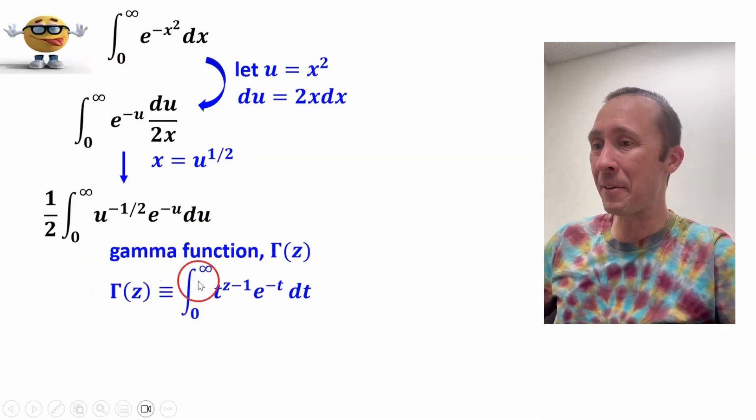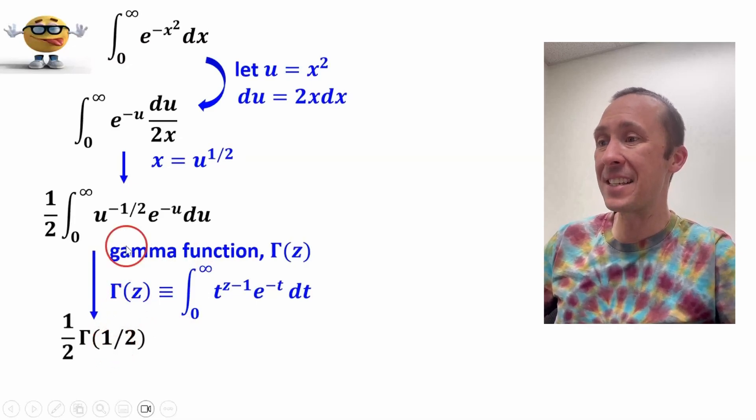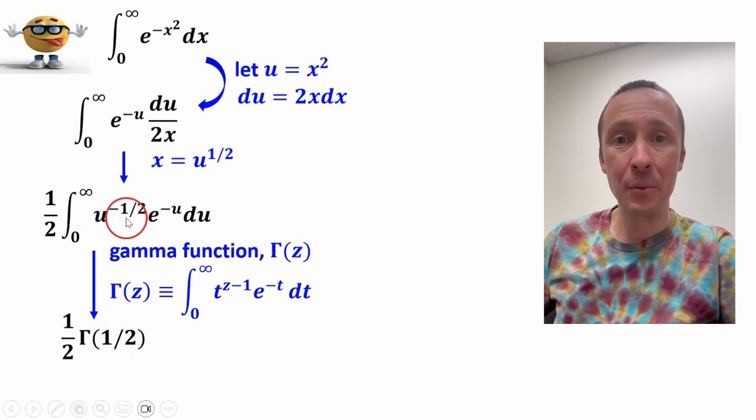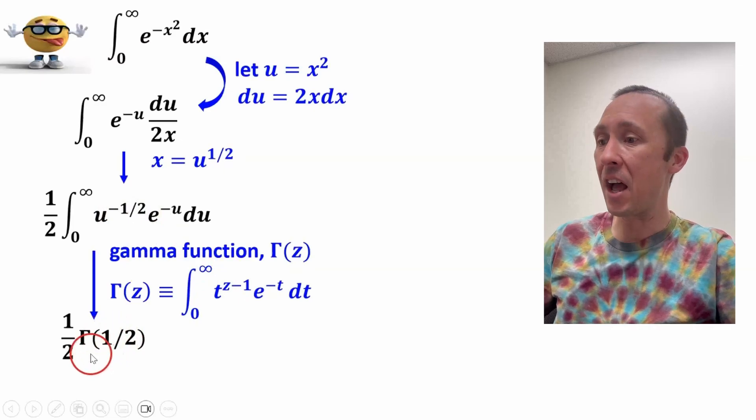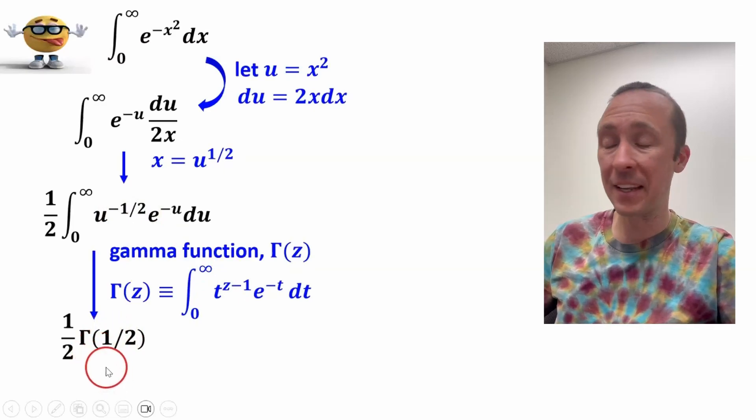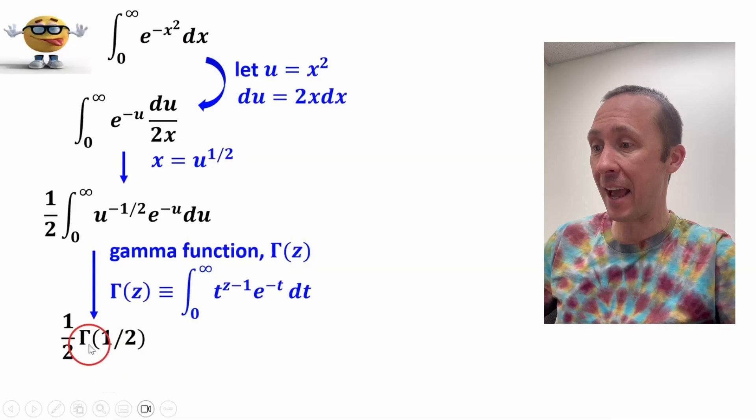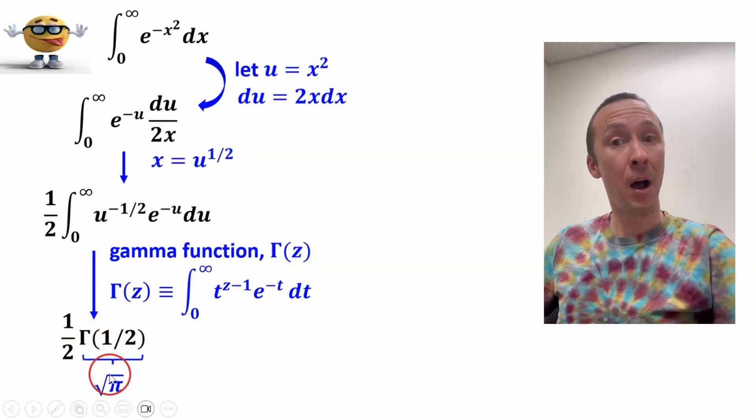And the gamma function, when z equals one-half, this is exactly equal to the integral that we're trying to solve. If z is one-half, we get negative one-half here in the exponent, which is what we want. And a well-known result from the gamma function is that the gamma function of one-half is root pi.